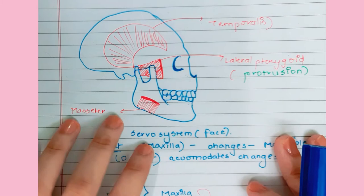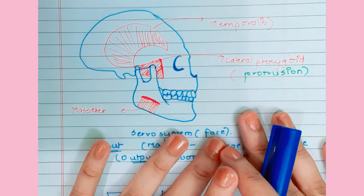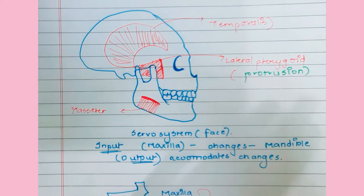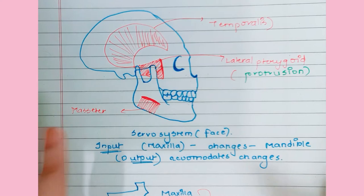Now, what does the lateral pterygoid have to do with this? The lateral pterygoid brings about protrusion of the mandible. We will study the muscles of mastication in detail, as understanding them is essential for orthodontics and prosthodontics.